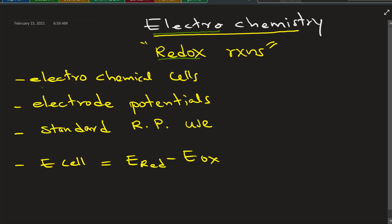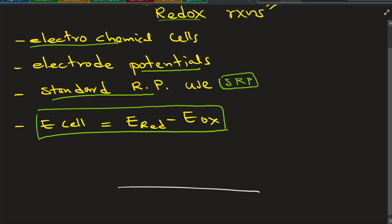Hi there, we are going to talk about electrochemistry, so this is redox reactions. We'll be discussing electrochemical cells, the potentials, the standard reduction potentials, and calculation of E cell. Let's begin with the periodic table.